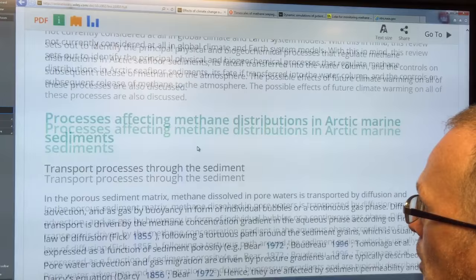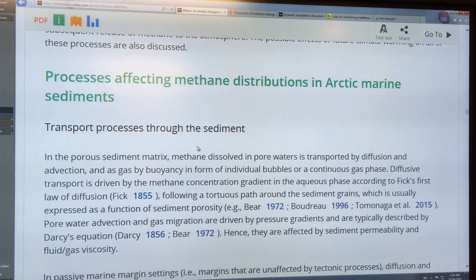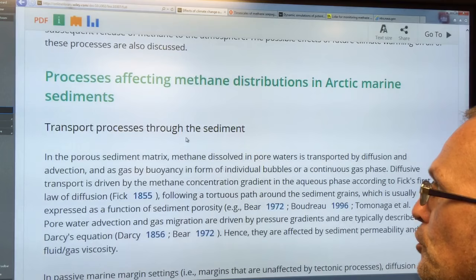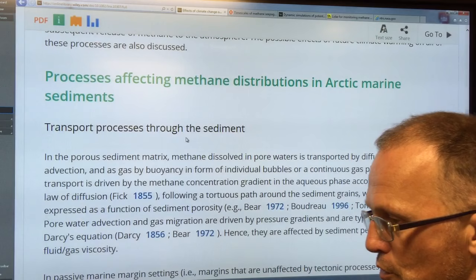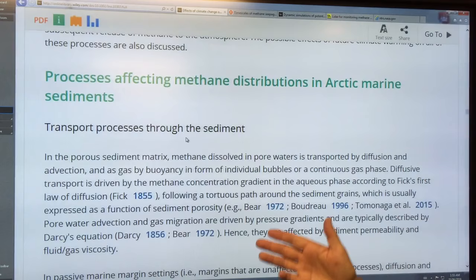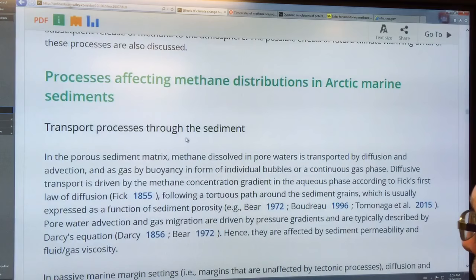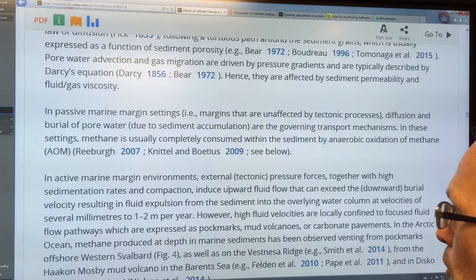So processes, there's many different physical processes that affect the methane distribution in the sediments. So they transport through the sediments. How do they get through the sediments? Do they go through faults? Do they go through porous sediments? Through the pore waters moving? Do they follow a path around the grains? There's lots of work being done to try to figure out the rates that the methane can come out, the velocities.